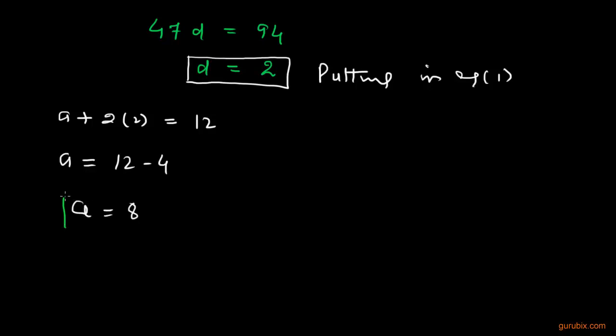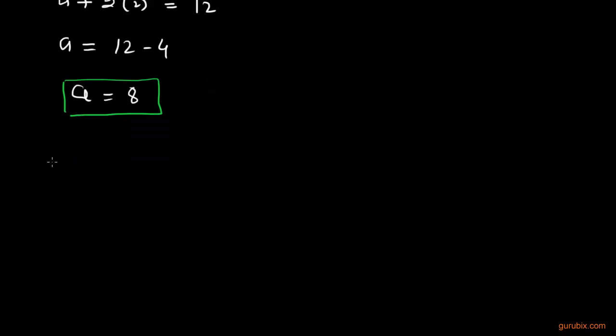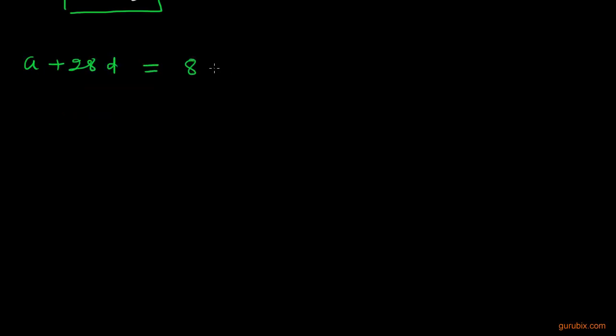Therefore, the value of A is 8. Now we have found the value of both A and D. So we can now find the 29th term, and the 29th term equals A plus 28D. The value of A is 8, and 28 multiplied by 2.